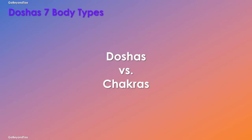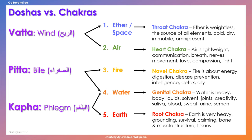Is there a relationship between doshas and chakras? It turns out there is. Because each of the elements — ether, air, fire, water, and earth — are related to the chakras, that creates a relationship with vata, pitta, and kapha. Vata is mainly ether and air, which promotes healthy throat and heart chakras. Pitta is fire and water, promoting the navel and genital chakras. Kapha is earth and water, promoting the genital and root chakras.